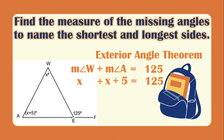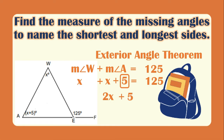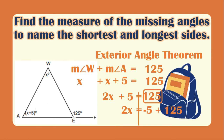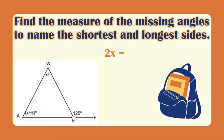Combining like terms: x plus x gives 2x, so 2x plus 5 equals 125. Moving 5 to the right side, it becomes negative 5, so 2x equals 125 minus 5, which is 120.